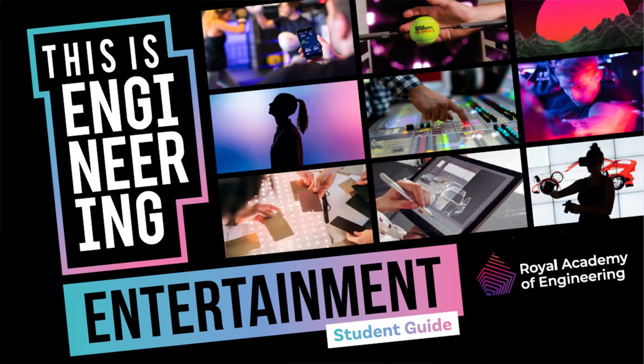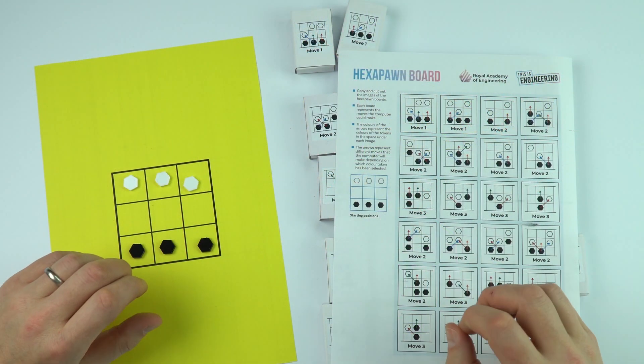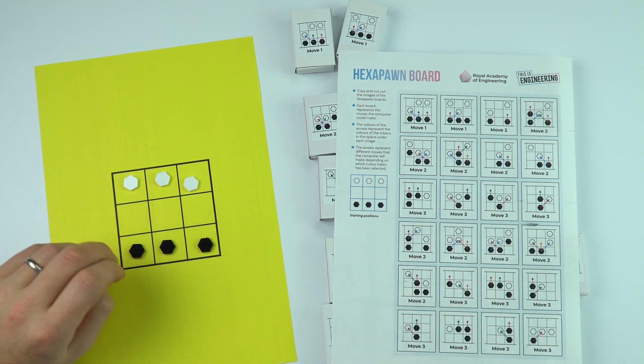One of the activities in the This Is Engineering Entertainment Pack is called Hexa Pawn, which is a simplified version of Noughts and Crosses.